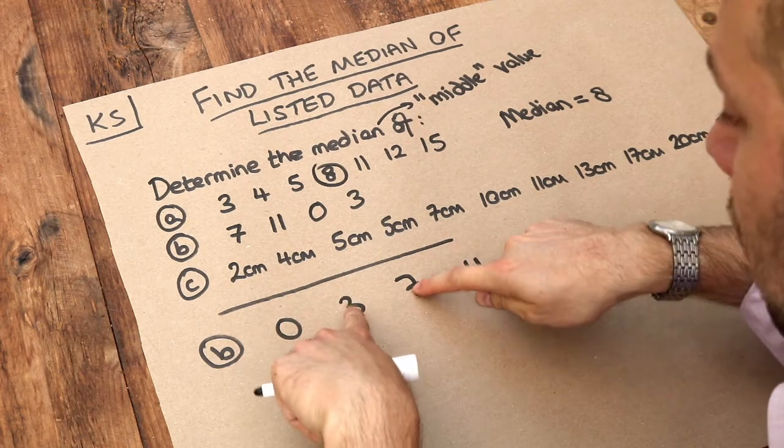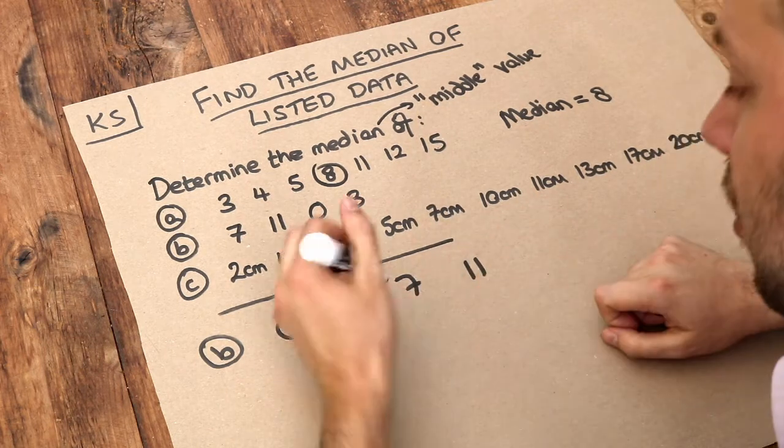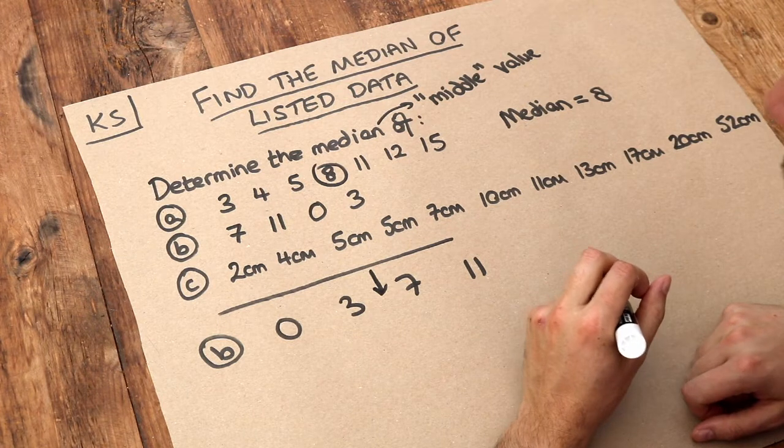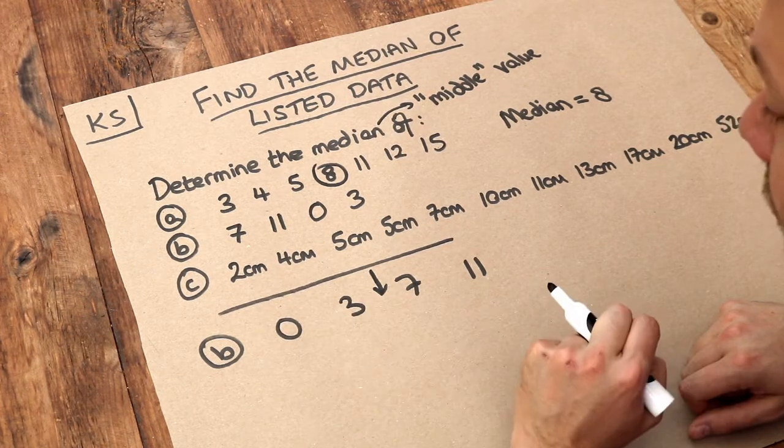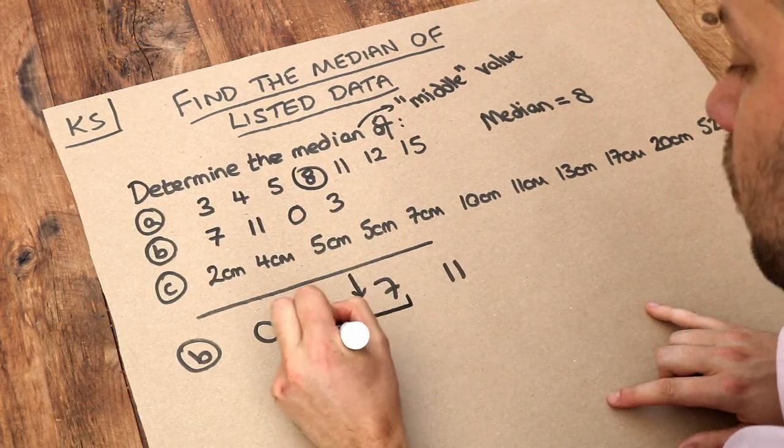So what do we do? Well, in the case where we have an even number of items and there isn't a middle value, we just use halfway between the middle two.